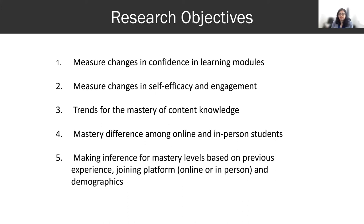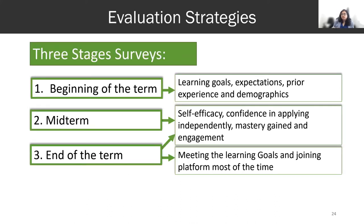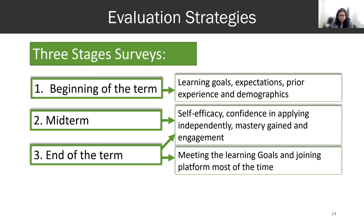The evaluation strategy I followed: I collected three surveys at the beginning, midterm, and end of term. I have human ethics approval from UBC. At the beginning I asked about learning goals, expectations, experiences, and demographics. In the midterm survey, I asked about self-efficacy — how confident they feel applying the learned materials — and how they're gaining mastery, and about engagement.